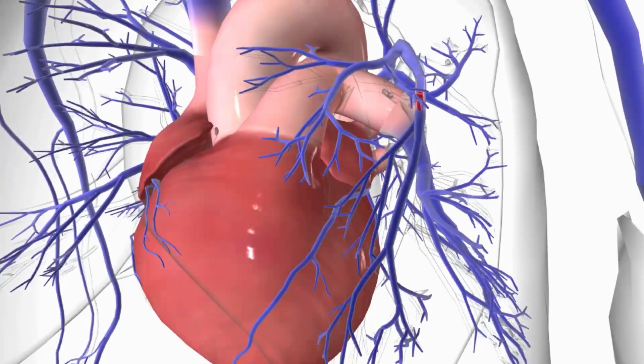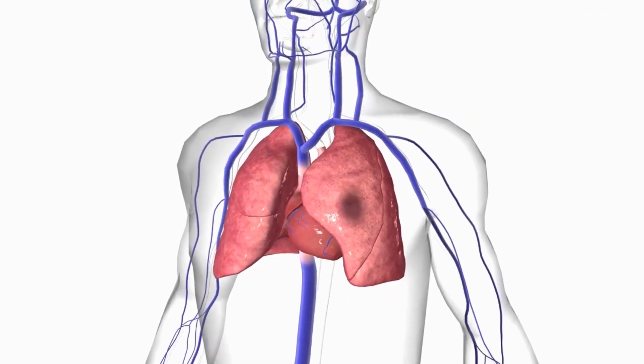That clot then blocks the blood vessels within the lungs, which can cause damage to the lung tissue and of course can restrict gaseous exchange in the lungs, affecting our oxygen and carbon dioxide levels throughout the body. As a result, a PE is an emergency situation in the medical world and should be acted upon immediately to try and break up that clot in order to restore full circulation again.